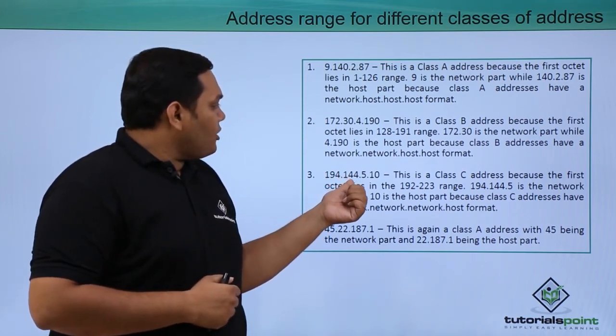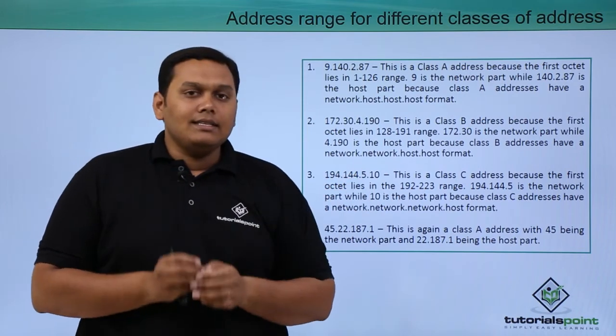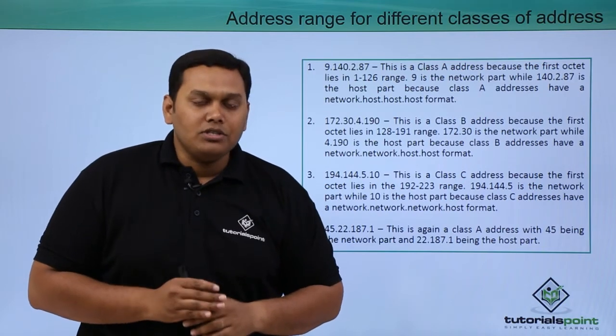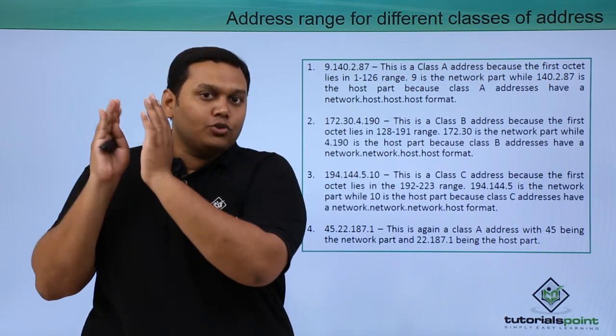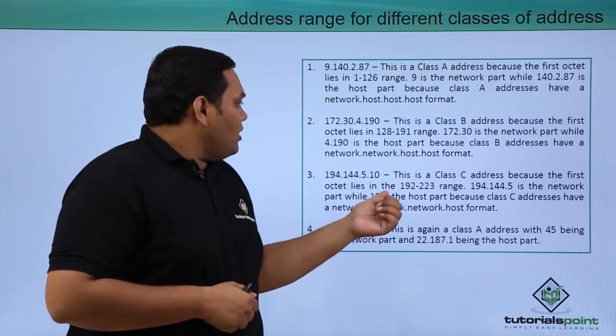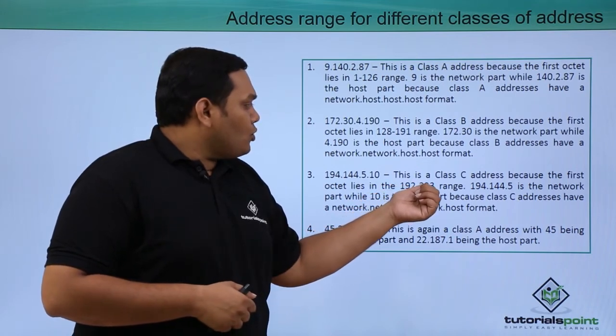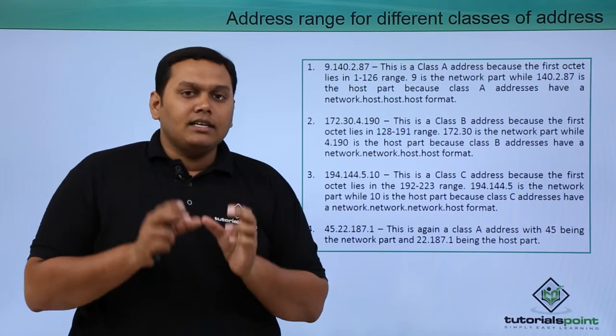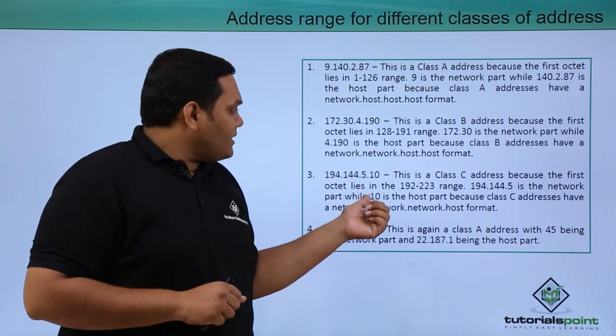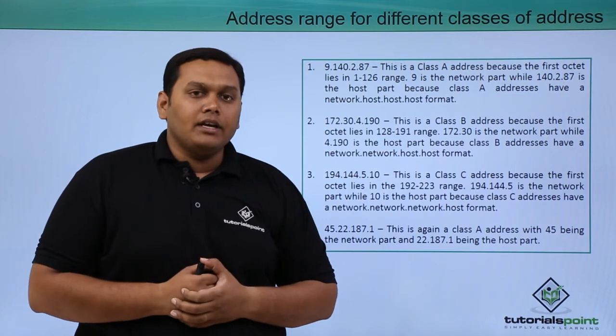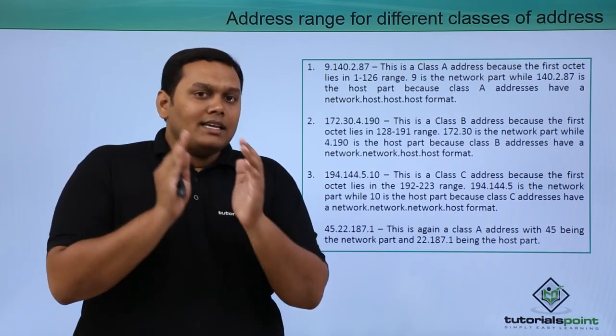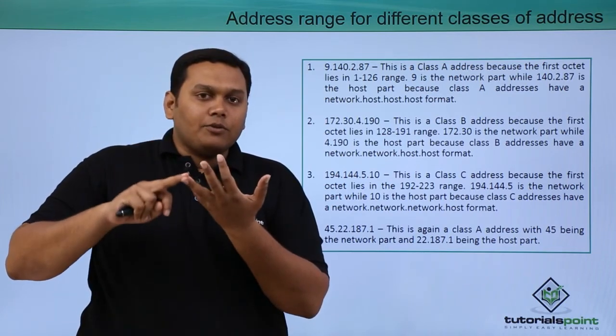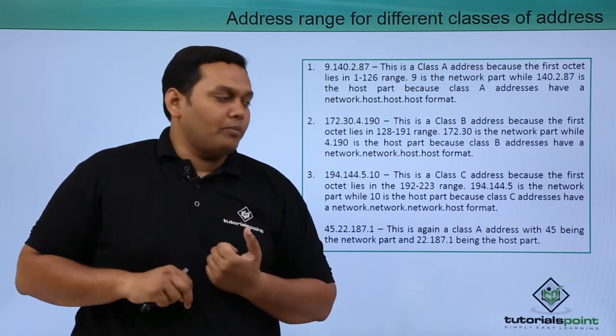194.144.5.10 is a class C address because the first octet range should be between 192 to 223. So the first 3 octets come under the network component and the last octet, 10, is the host part. Class C has the format network.network.network.host.